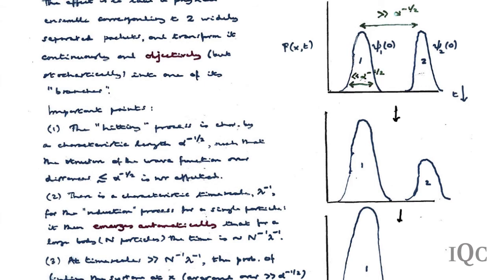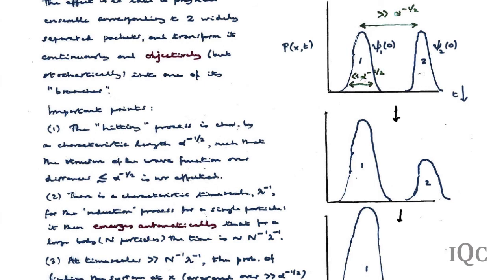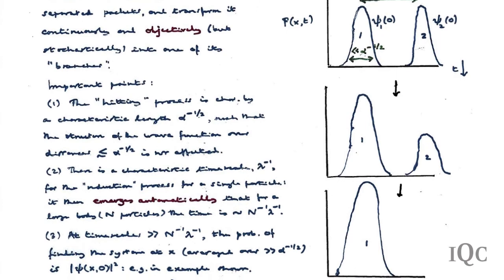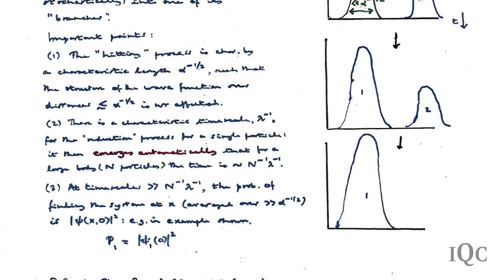Starting with a single particle whose probability density is concentrated in two widely-separated wave packets—as in the Young's slit experiment—the effect of the noise and subsequent modification of the Schrödinger equation is that the physical probability of being in one wave packet gradually shrinks while it increases in the other. This may not be monotonic, but at the end of the day one ends up in one of the two wave packets, with probability exactly proportional to the norm of the original wave packet—precisely the quantum mechanical prediction.